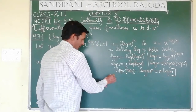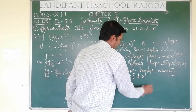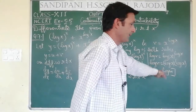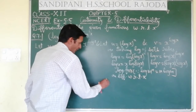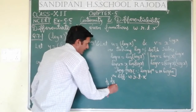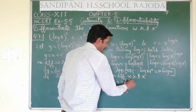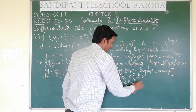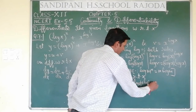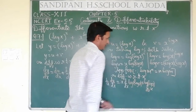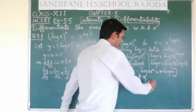Now on differentiating with respect to x: this will become 1 upon u times du by dx, and after that we apply first function into differentiation of second — that is log(log x) — plus second into differentiation of first. In both parts we have to apply the product formula.